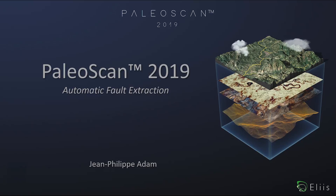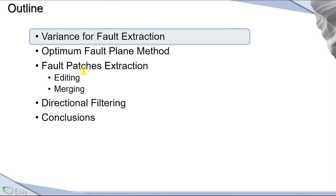I will start with a short PowerPoint presentation and then switch to a live demo. This is the schedule: I will show you the current method available in PaleoScan 2018 based on variance, then the new method to automatically extract faults, how we extract and edit and merge this automatic fault extraction, and then some conclusions.